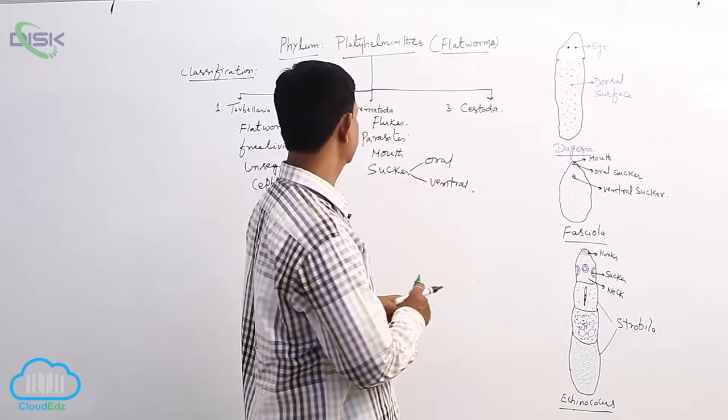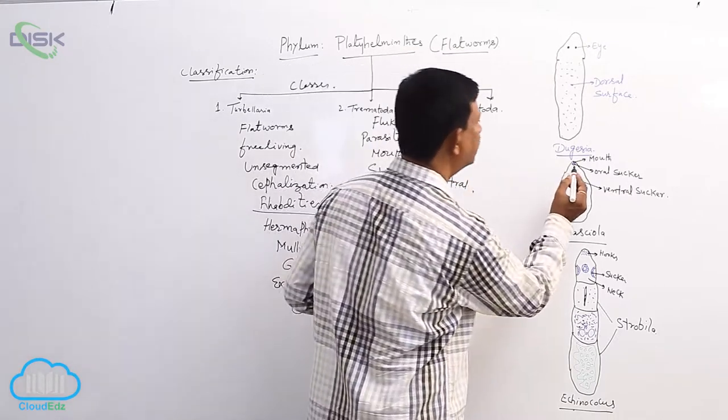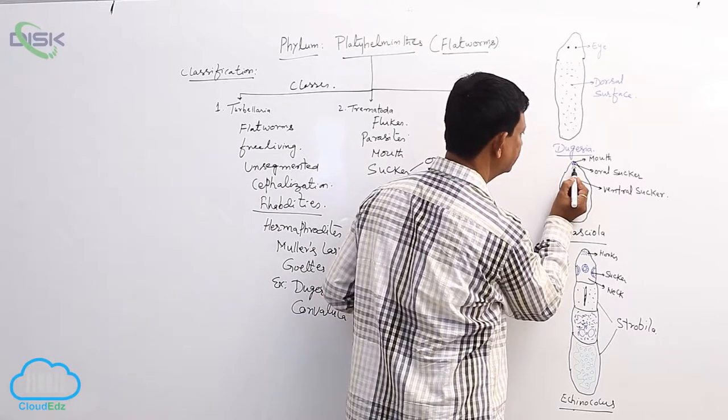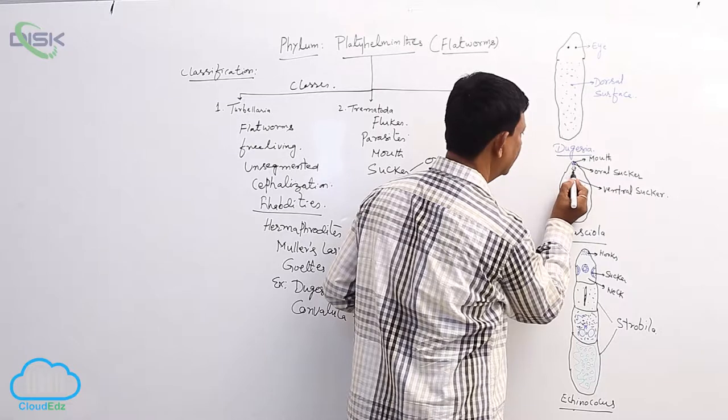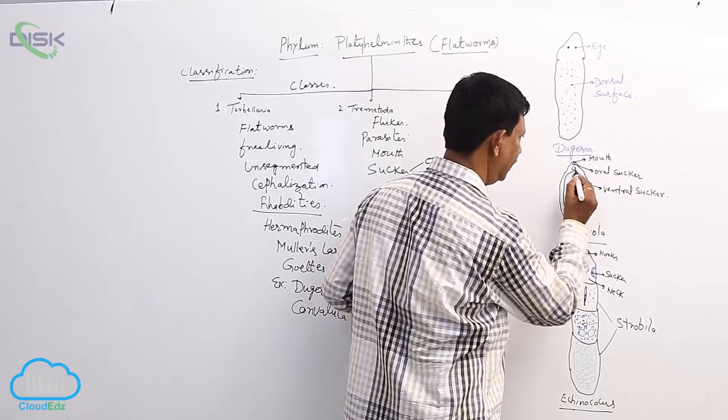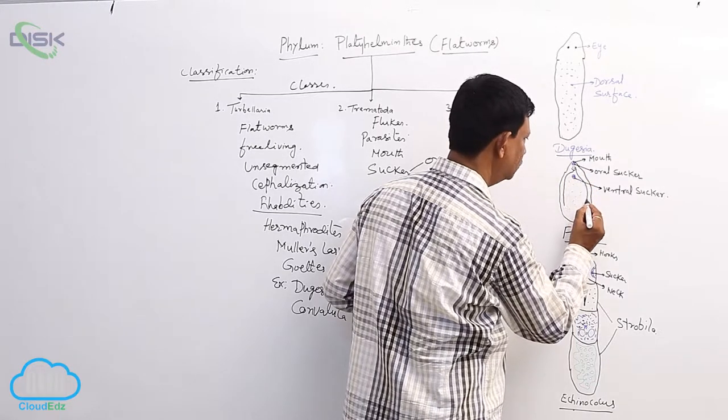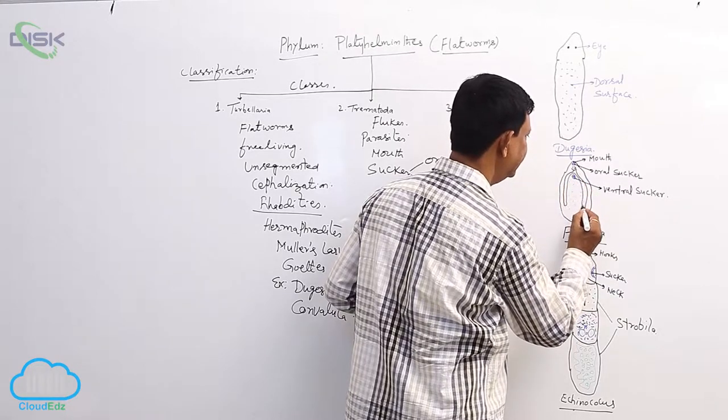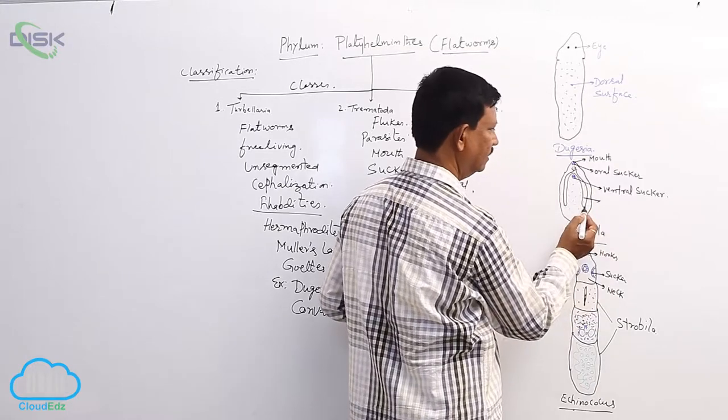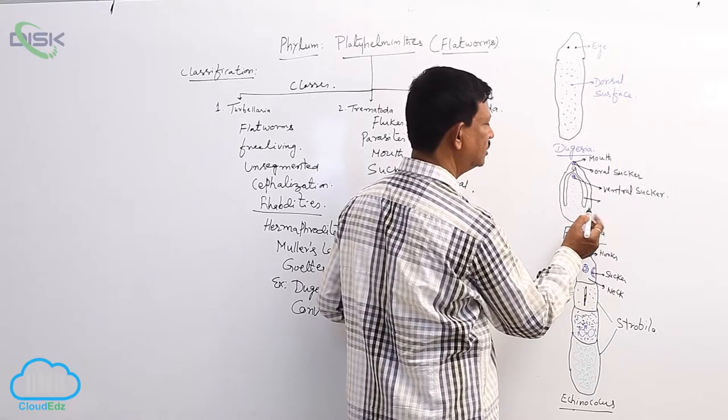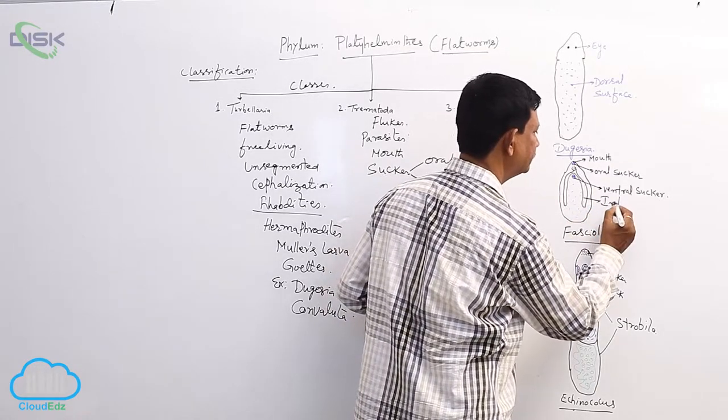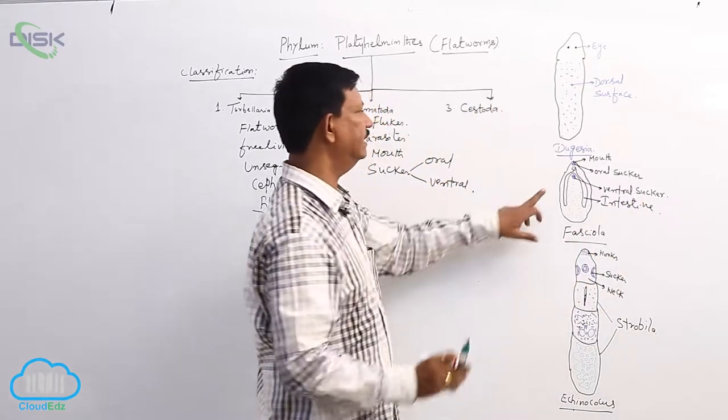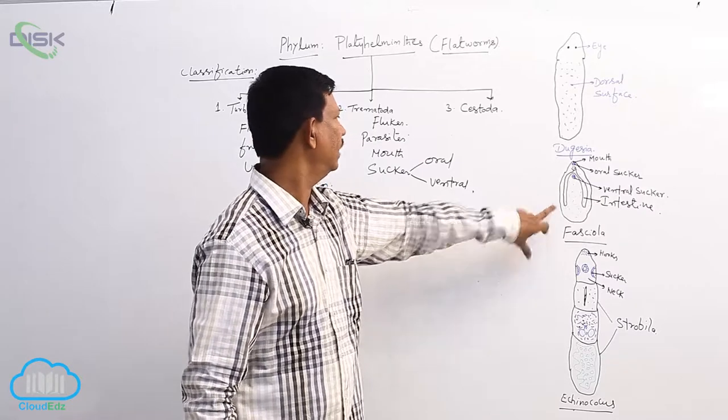It acts as an adhesive organ. Its mouth opens into pharynx, it is muscular and pharynx is divided into two cecal intestine. Intestine is hence blindly, there is no anus.